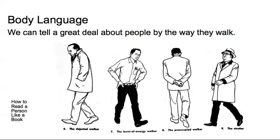From the way people walk, we can tell a great deal about them. We know that this person is dejected and depressed. This person is preoccupied. And this person is strutting with chest out, head up pose.